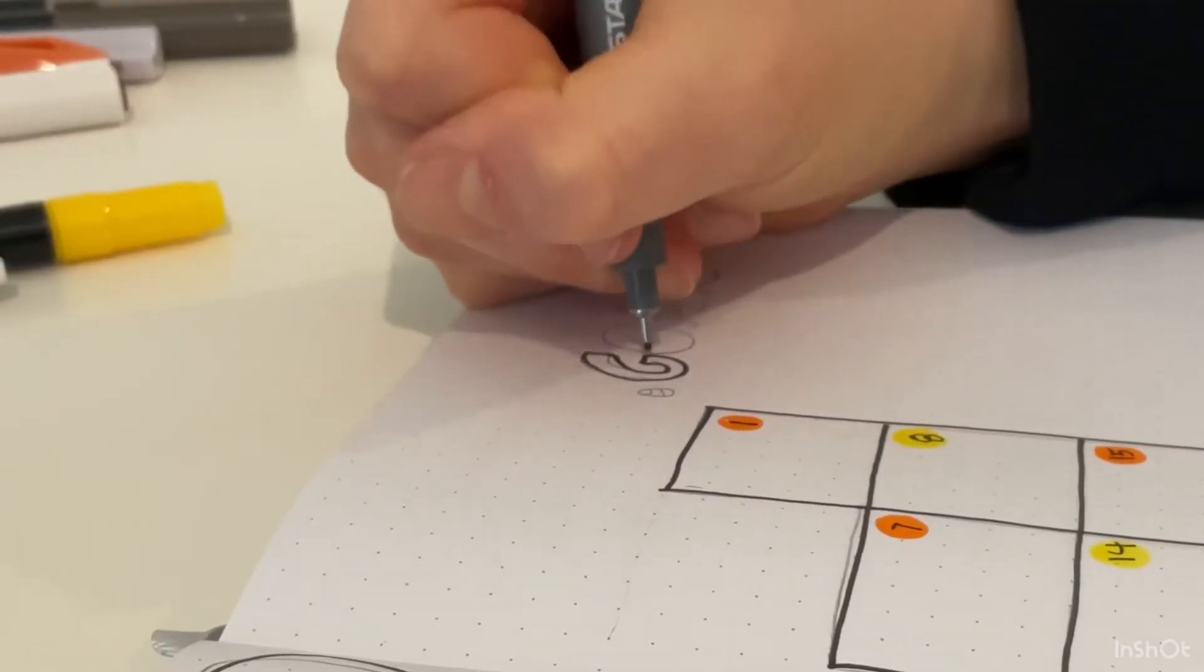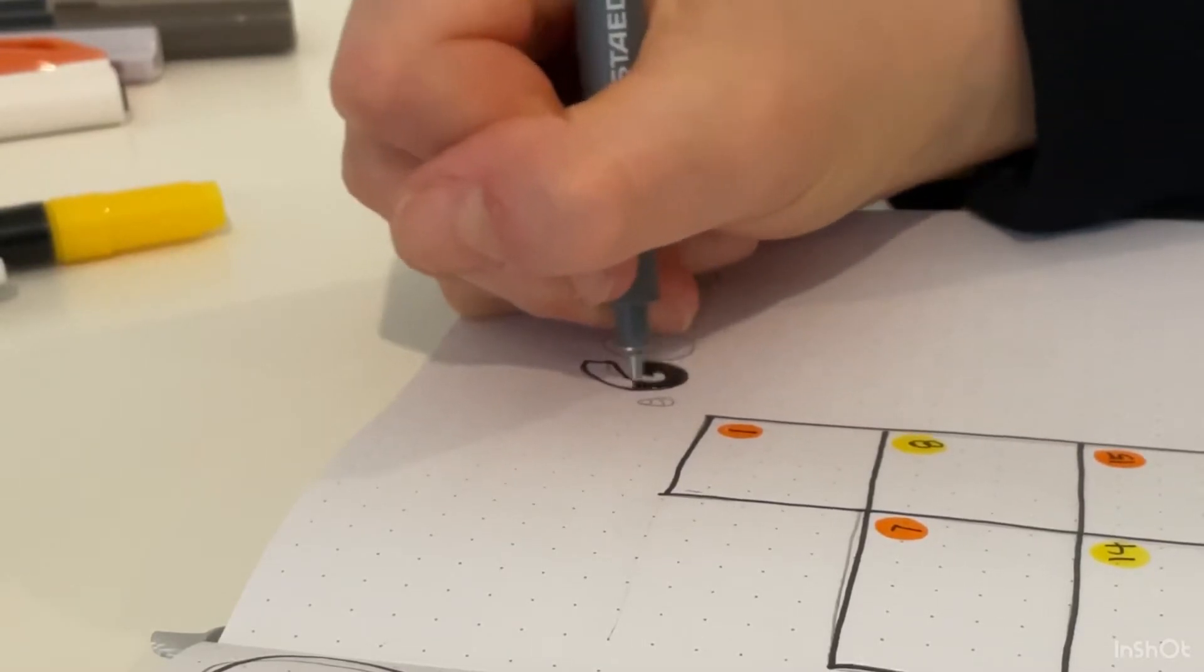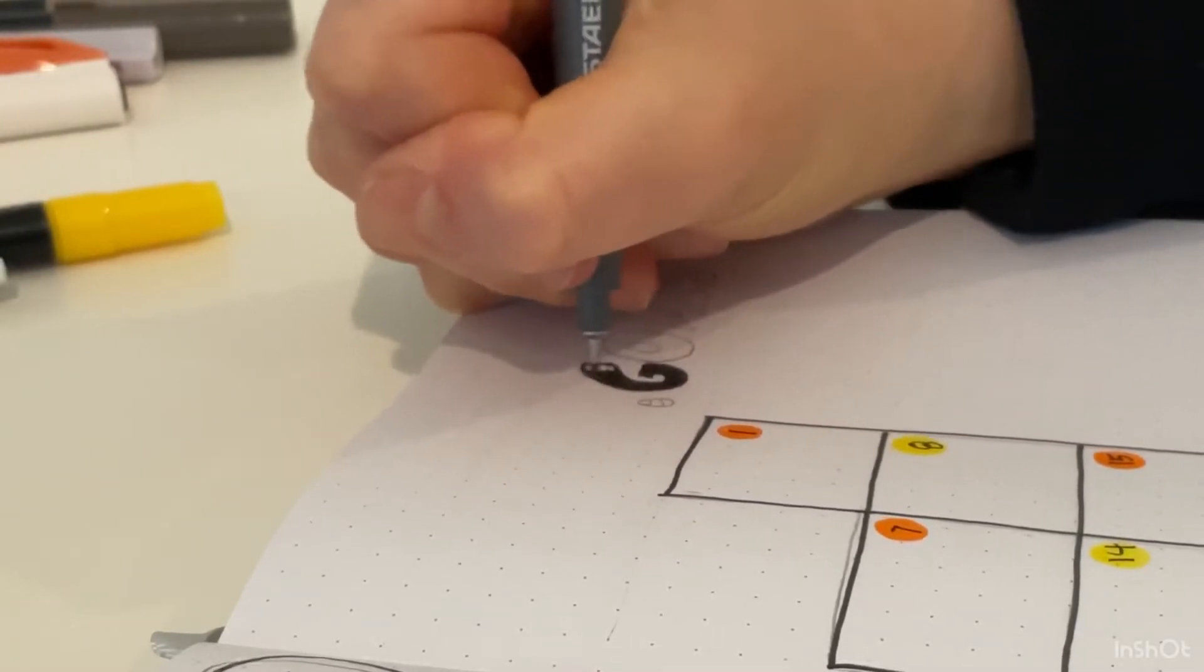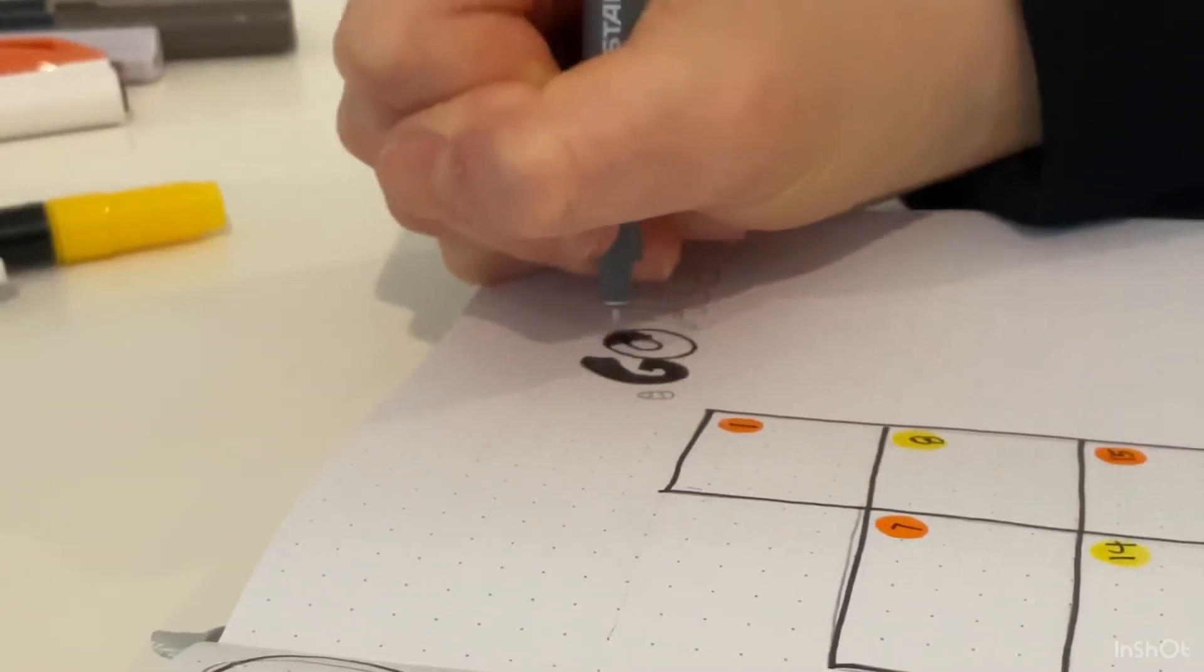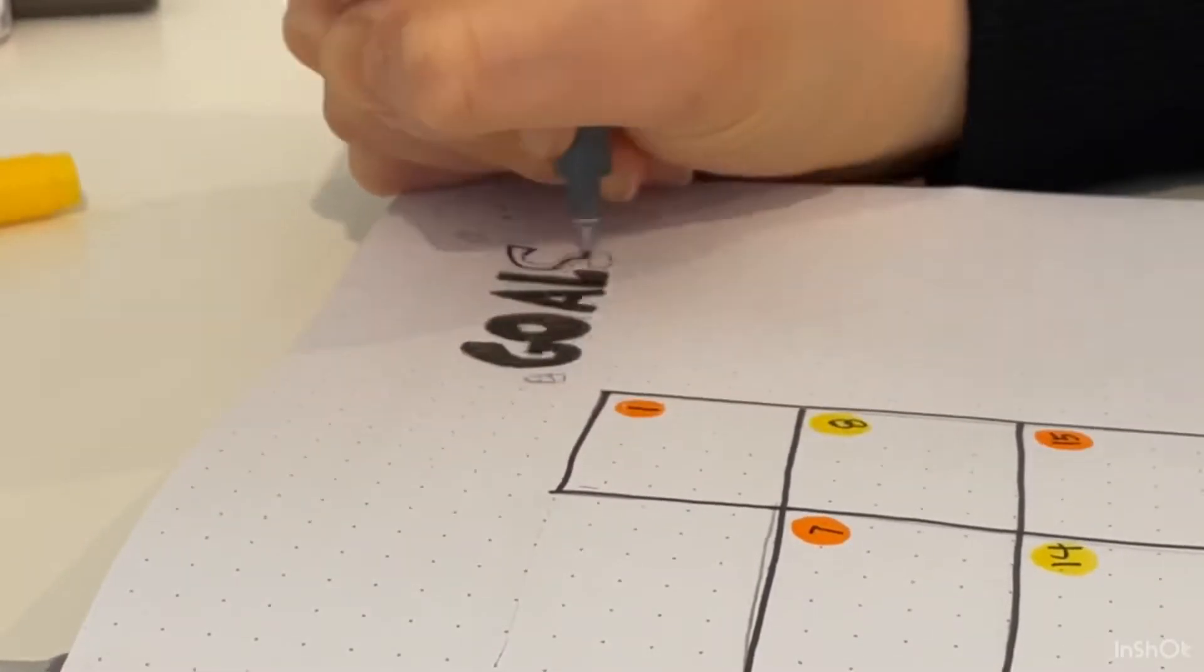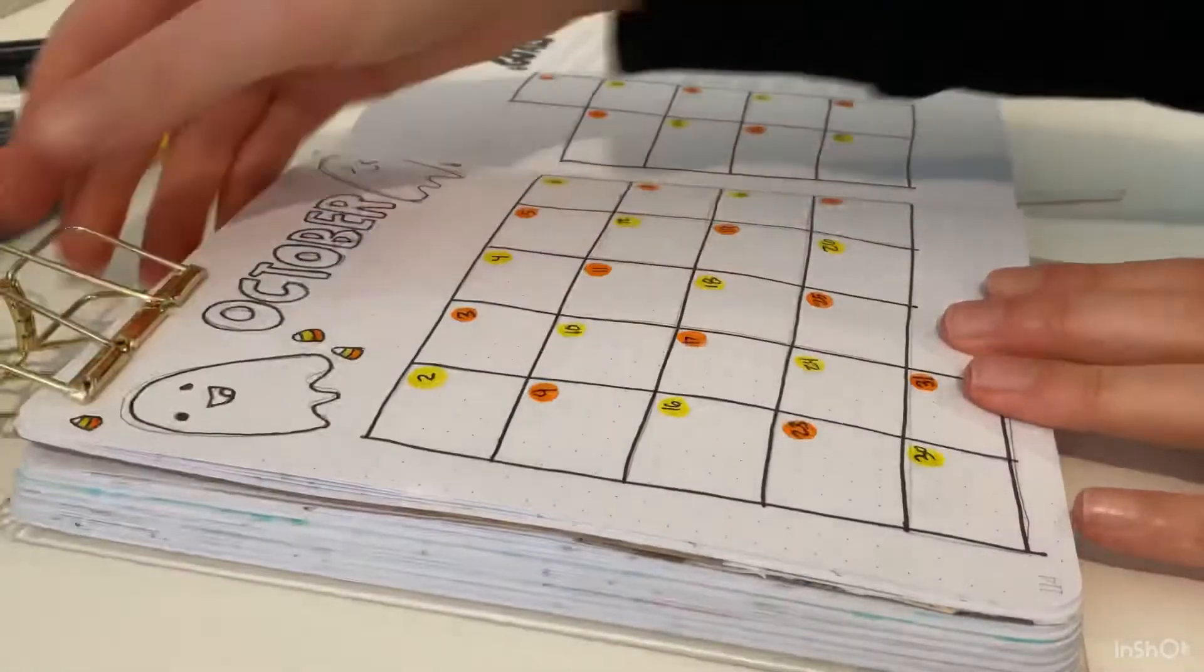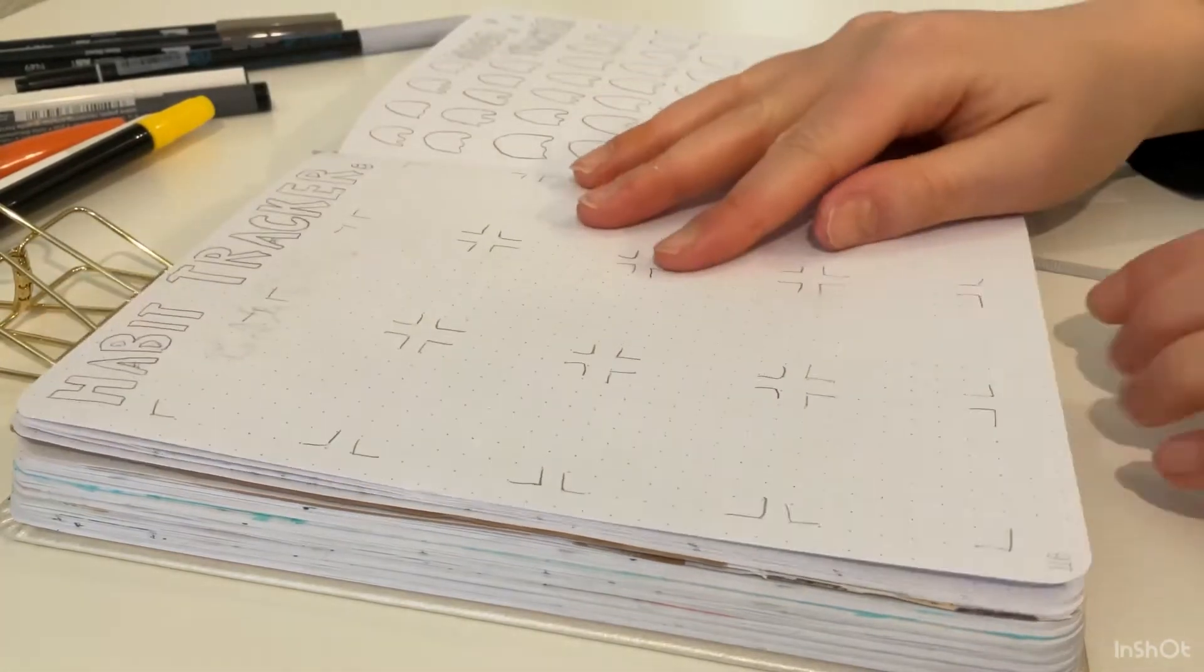Now that I drew the ghosts by the October header at the top of this calendar page, I'm moving on to a little goals section over here. I'm going to repeat the same with the block letters and coloring them in.